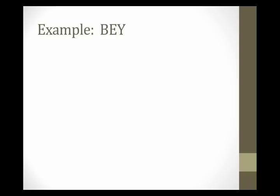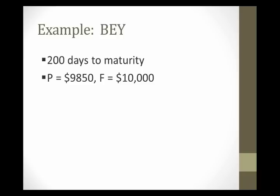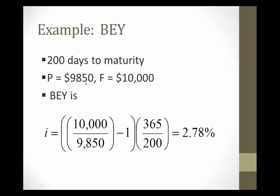Specifically, let's think about the zero-coupon bond example we've been using. 200 days to maturity, price of $98.50, face value of $10,000. The bond-equivalent yield, using the equation on the previous slide, face value of $10,000, price of $98.50, 200 days to maturity, we get a bond-equivalent yield of 2.78%. And this understates a true yield to maturity that's closer to 2.8%.